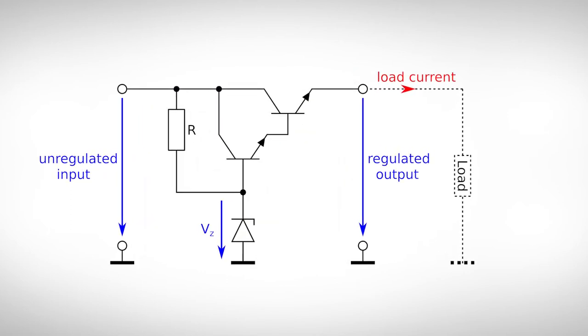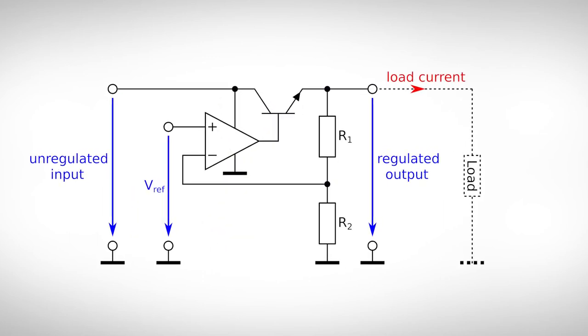Since power transistors often have a very low current gain, the simple NPN transistor is replaced by a so-called Darlington transistor. This is a special type of transistor circuit consisting of two NPN transistors in which the total current gain is calculated by multiplying the individual gains. The use of a Zener diode as reference voltage works quite well but has some disadvantages, in particular for line regulation. Therefore, most voltage regulators are built with a control amplifier.